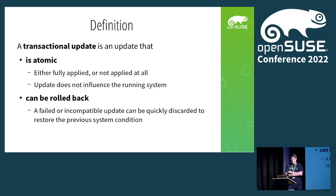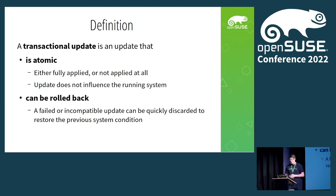Another property of a transactional system is that it can be rolled back. So in case you realize later that the system has been broken, you still have the option to go back to a previously known working state. That definition, by the way, is not specific to OpenSUSE — it can be applied in exactly the same way to other systems.